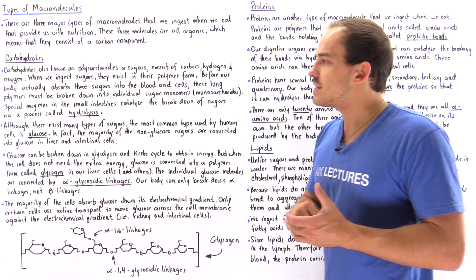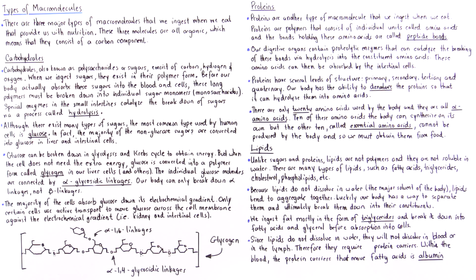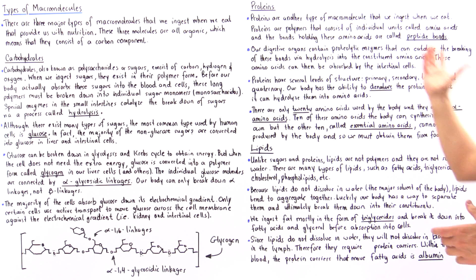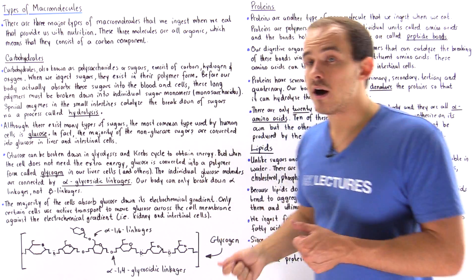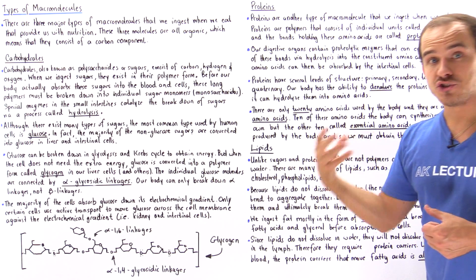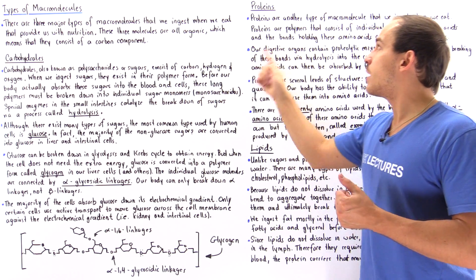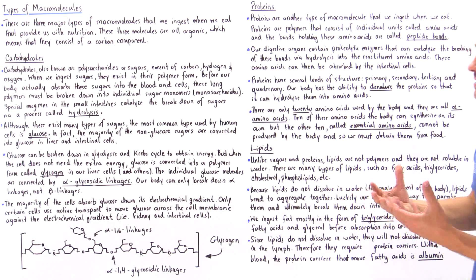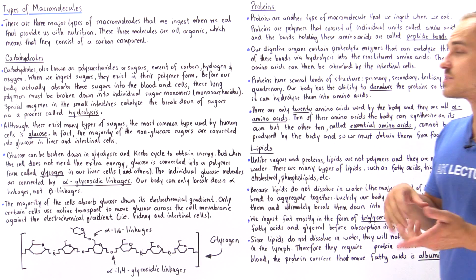Just like we have specialized enzymes that break down polysaccharides, we also have specialized enzymes in the stomach and small intestine to break down peptide bonds. Our body uses these proteolytic enzymes to catalyze the hydrolysis — the catabolic breakdown — of polypeptides into their constituent amino acids. Only then can our cells actually absorb those amino acids. The majority of our proteins are absorbed into cells as individual amino acids, though in some cases we can also absorb dipeptides and tripeptides.